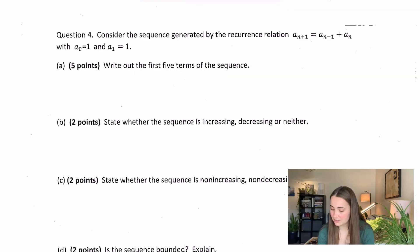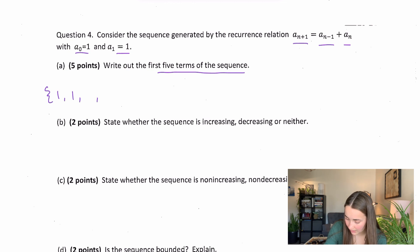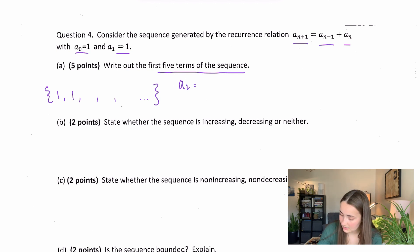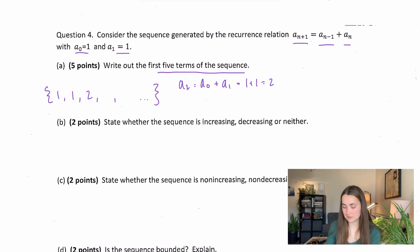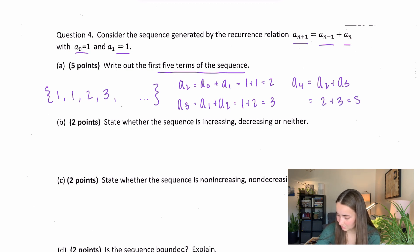We have some sequences. Consider the recurrence relation a_{n+1} = a_{n-1} + a_n with first two terms given. Write out the first five terms: we already have a_0=1, a_1=1. Then a_2 = a_0 + a_1 = 1+1 = 2; a_3 = a_1 + a_2 = 1+2 = 3; a_4 = a_2 + a_3 = 2+3 = 5. So the first five terms are 1, 1, 2, 3, 5.